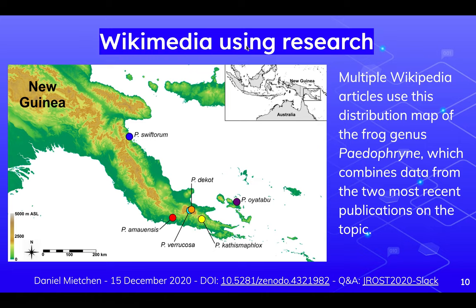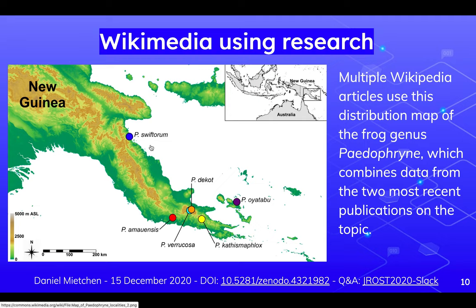Then Wikimedia is using research. Here we have an example of the distribution map of a genus of frogs. The two most recent publications on the topic both described two new species, and so they say the total number of species in the genus is four. The only place where you can find the correct number is actually the Wikimedia platforms, especially Wikimedia Commons.